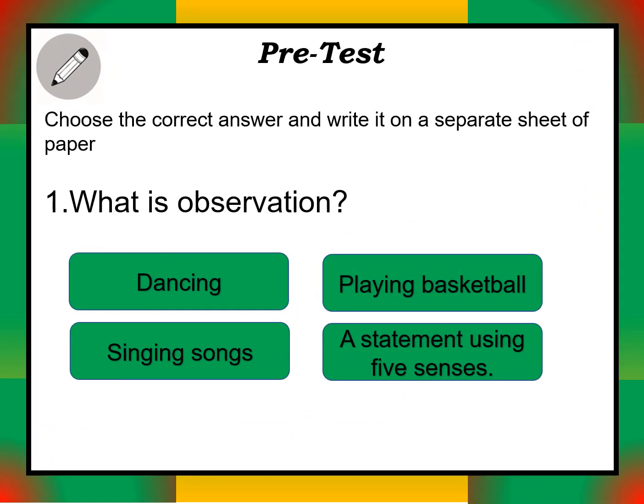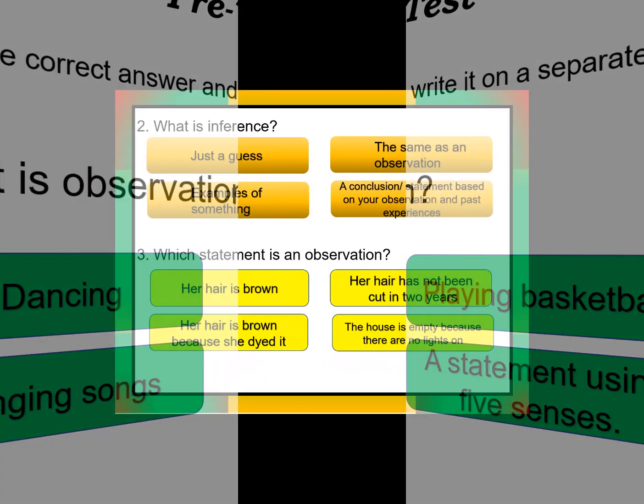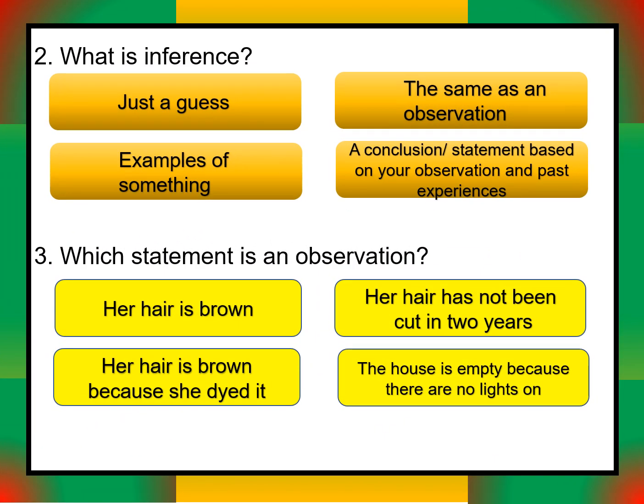Write your answers on a separate sheet of paper. Number one: what is observation — dancing, singing songs, playing basketball, or a statement using five senses? Number two: what is inference — just a guess, the same as an observation, or a conclusion statement based on your observation and past experiences?